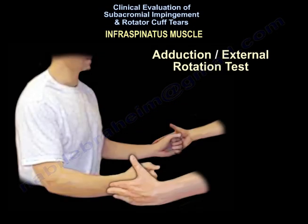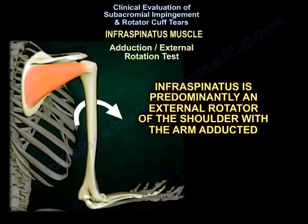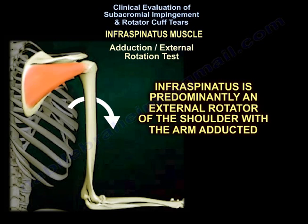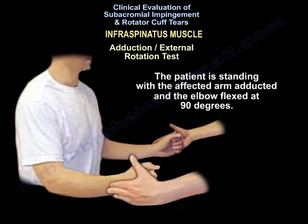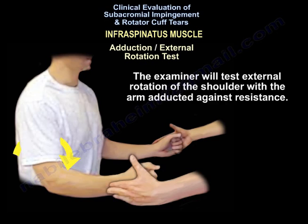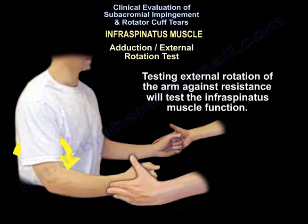Another test is the adduction and external rotation test, used for the infraspinatus muscle. The infraspinatus muscle is predominantly an external rotator of the shoulder with the arm adducted. The patient is standing with the affected arm adducted and the elbow flexed at 90 degrees. The examiner will test external rotation of the shoulder against resistance, which tests infraspinatus muscle function.